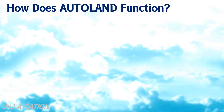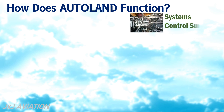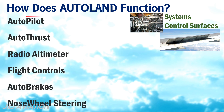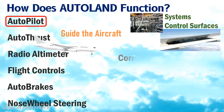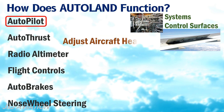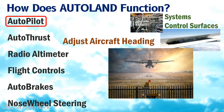How does the Autoland function? To perform a landing, the Autoland system makes use of different systems and control surfaces. The Autopilot is required to guide the aircraft during the descent phase to maintain the aircraft on the correct glide path. The Autopilot will also adjust the aircraft's heading in order to match with the runway's centerline.